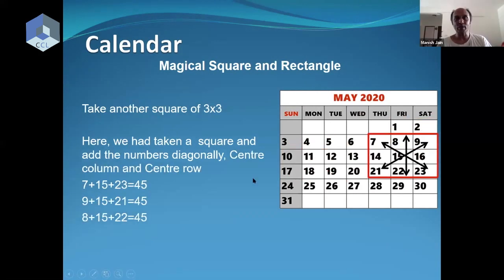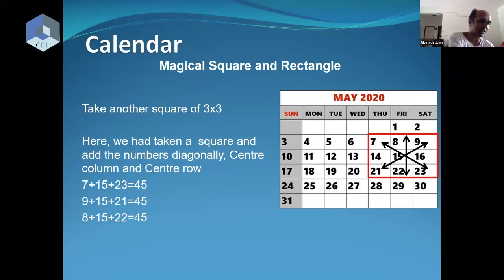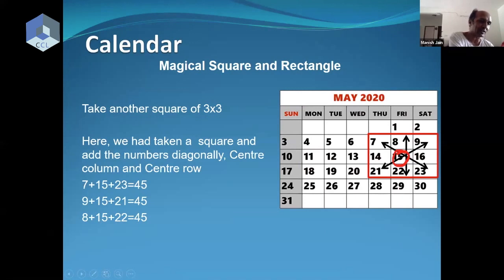So as you can see, here also 7, 15, 23 — if you add them, everything comes to 45. And the interesting thing is that 15 is the average of all these diagonals. 15 is the average.